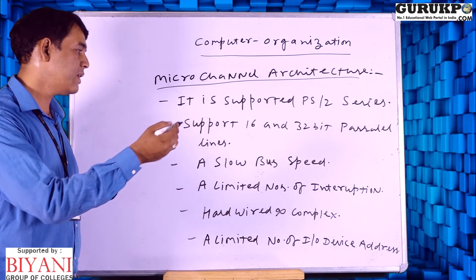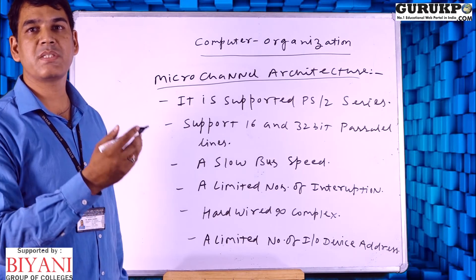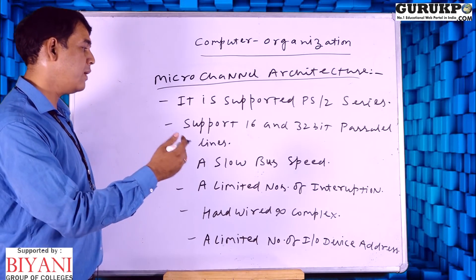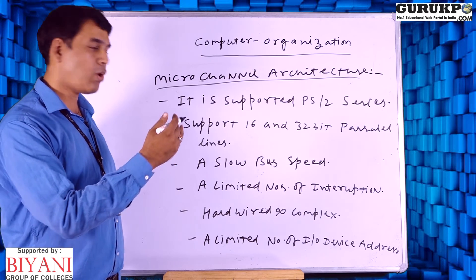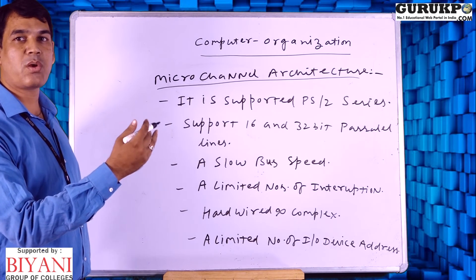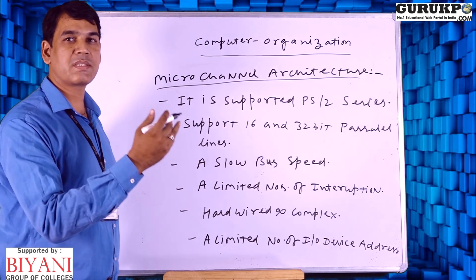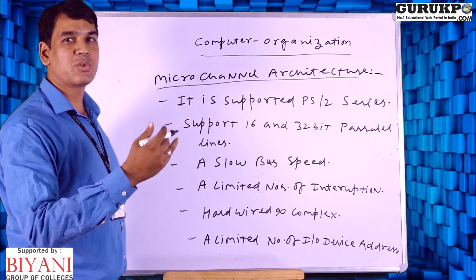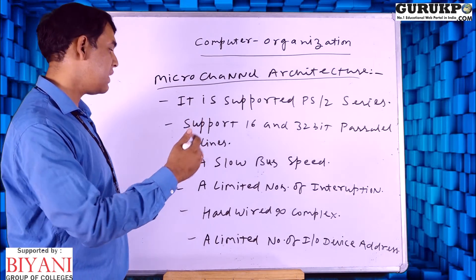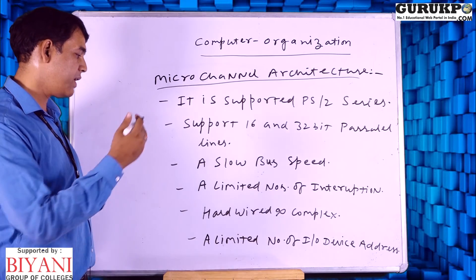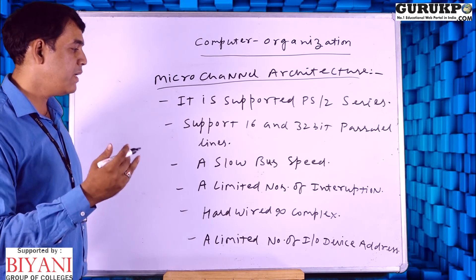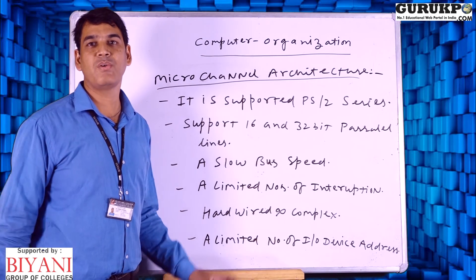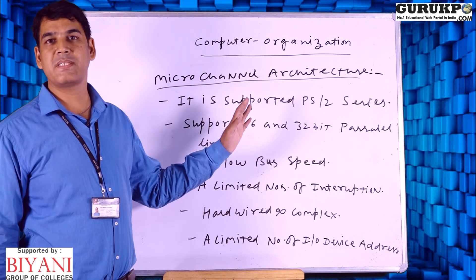MCA has a slow bus speed. It has interruption at a very low level, with a limited number of interruptions. Hardwired complexity is also present. Some complex computers such as supercomputers use these kinds of architecture. There is also a limited number of I/O device addresses supported.